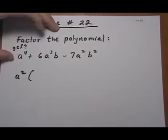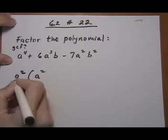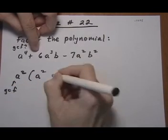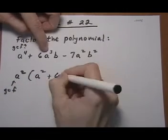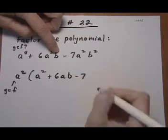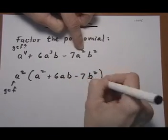So a² is the GCF and we're going to have leftovers. a² + 6, we pulled out a² so we've got a left over and also ab - 7. We pulled out the a² so that's gone. So we have ab² left.